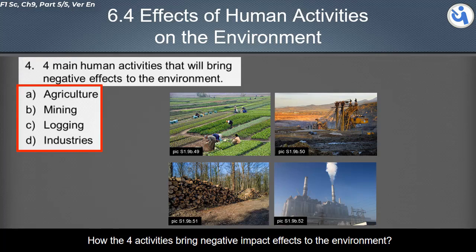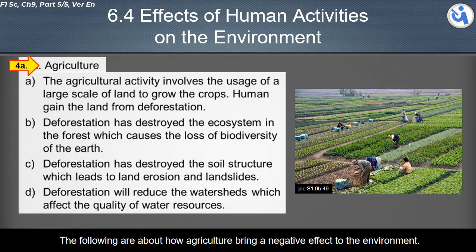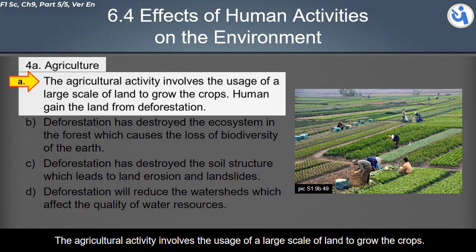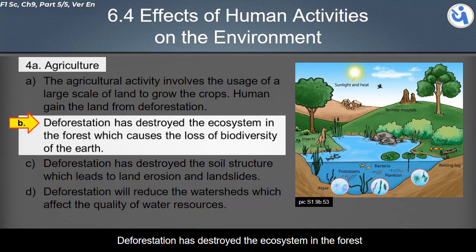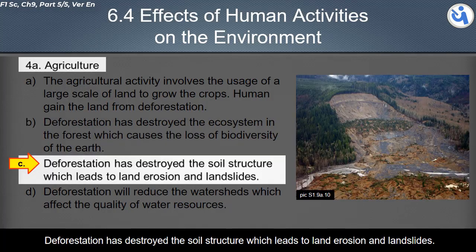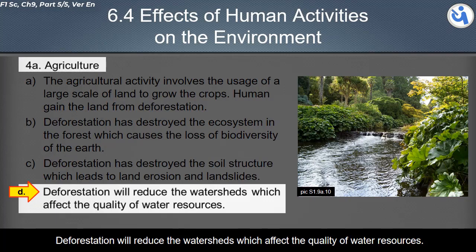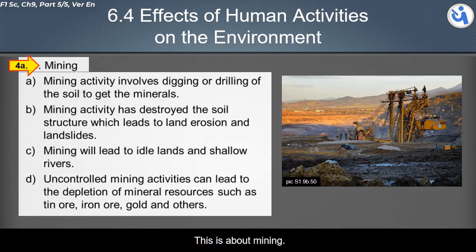Regarding how agriculture brings negative effects to the environment: agricultural activity involves the use of large-scale land to grow crops. Humans gain this land through deforestation. Deforestation destroys the ecosystem in the forest, causing the loss of biodiversity. It also destroys soil structure, leading to land erosion and landslides. Deforestation reduces watersheds, which affects the quality of water resources.